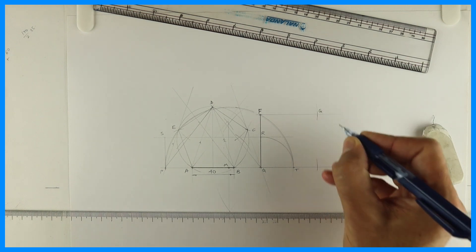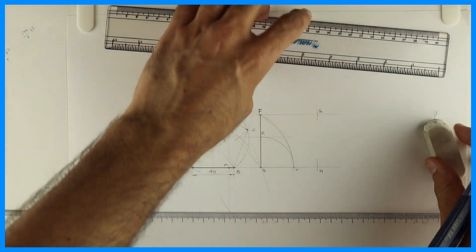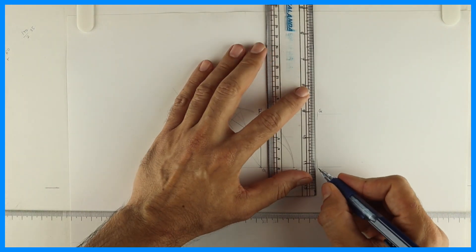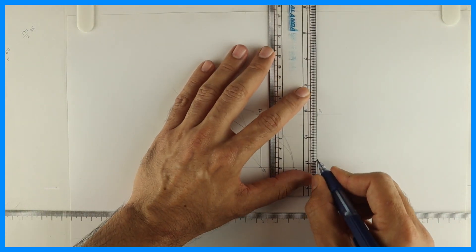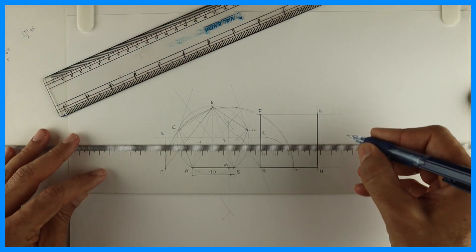So you'll get the required square when you'll join this. This is point G and H. So you got the required square, so we have converted pentagon into square.